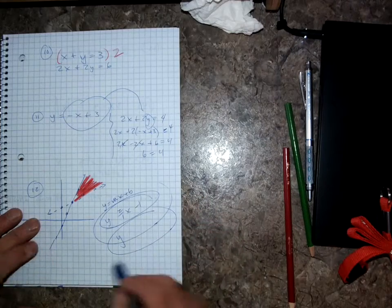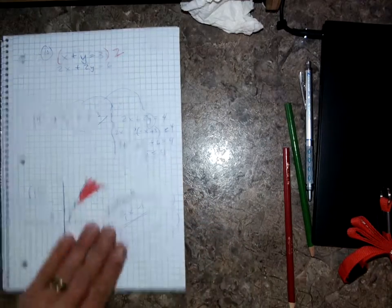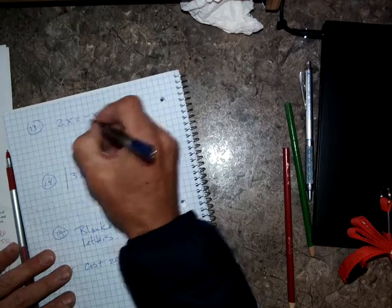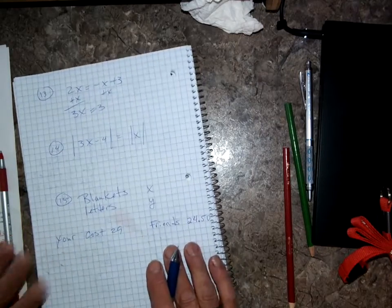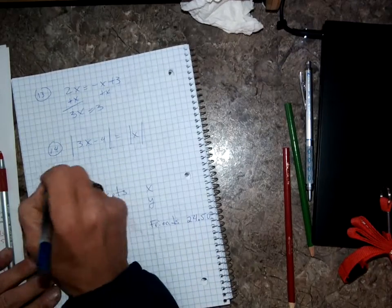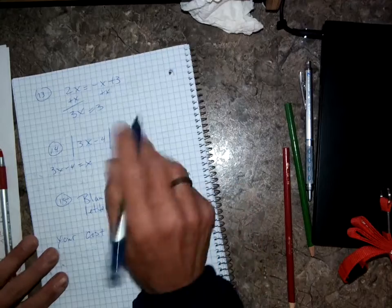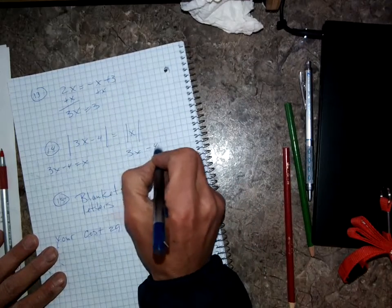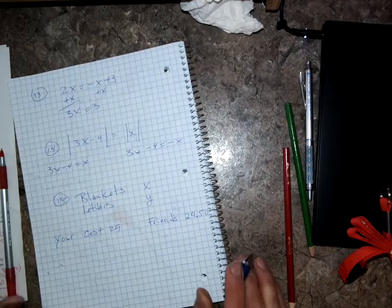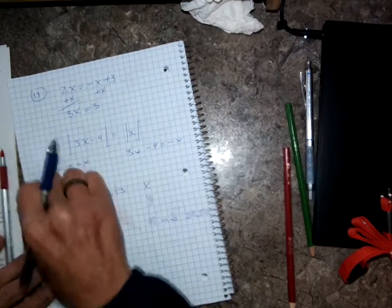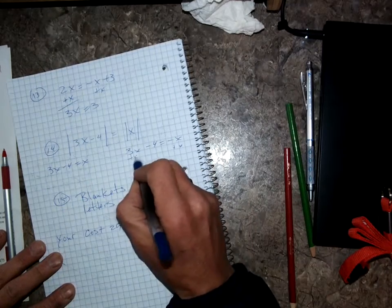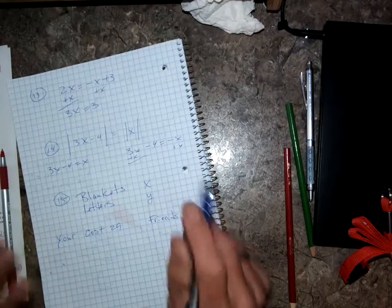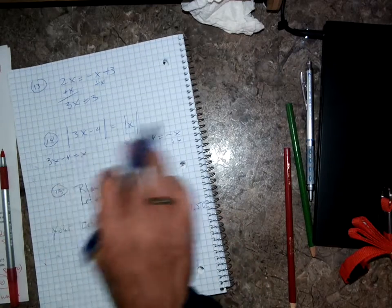Number thirteen: I'll go plus x plus x, and I get 3x equals 3 — you can finish from there. Number fourteen: because of absolute value, I have two cases. 3x minus 4 equals x, and also 3x minus 4 equals negative x. I'll solve each: first, minus x both sides, plus 4 both sides. Second, plus x both sides, plus 4 both sides. We get two answers for fourteen.